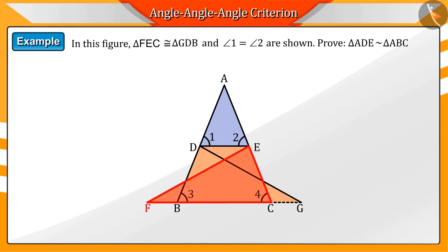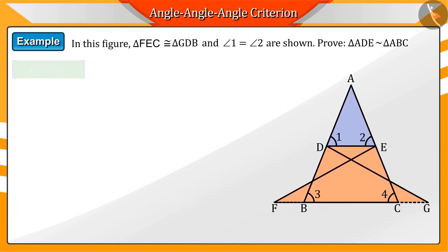In the given figure, triangles FEC and GDB are congruent and angles 1 and 2 are equal. Show that triangles ADE and ABC are similar triangles.